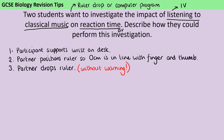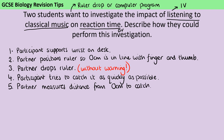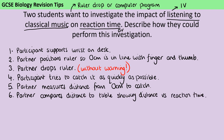You don't necessarily need to have stated in your method that they drop it without warning, but you definitely must not say they should count down and then drop it, because that would lose you the mark. You're then going to try to catch the ruler, and crucially your partner records how far the ruler fell before you caught it and writes down that number. Often we then compare the distance fallen to a table — for example, catching it at 7 cm might mean a reaction time of 0.2 seconds, and catching it at 20 cm might mean 0.4 seconds — so we get an actual time rather than just a distance.